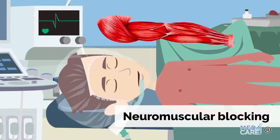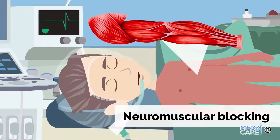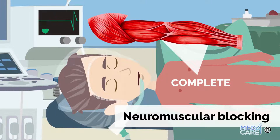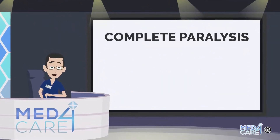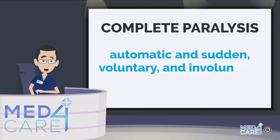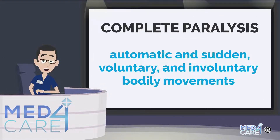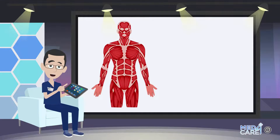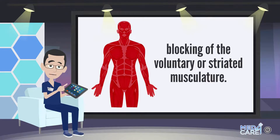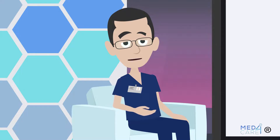Neuromuscular Blocking consists of the reduction of the tone, or tension, of the bodily musculature. It can be complete, with the total abolition of muscle tone, or partial, with a reduction in muscle tone. Complete paralysis is necessary to completely abolish automatic, sudden, voluntary, and involuntary bodily movements that could hinder the surgeon or endanger the life of the patient. In these cases, muscle paralysis must be complete and every single movement prevented. Complete paralysis of the musculature involves blocking of the voluntary or striated musculature, including all the muscles of movement but also the diaphragm, which is a semi-voluntary muscle that allows us to breathe.